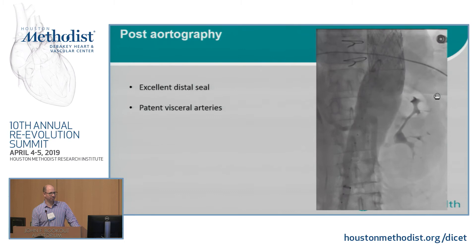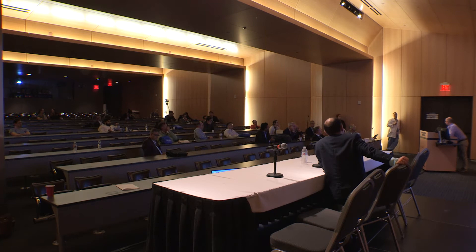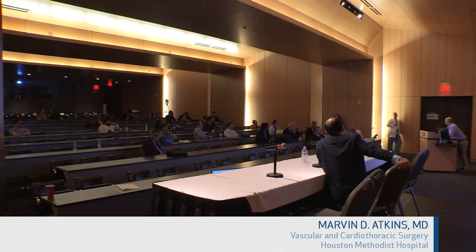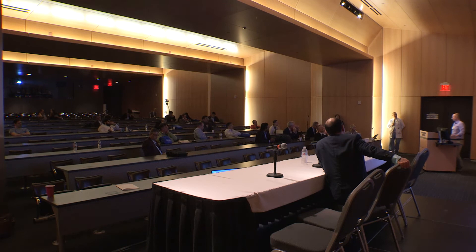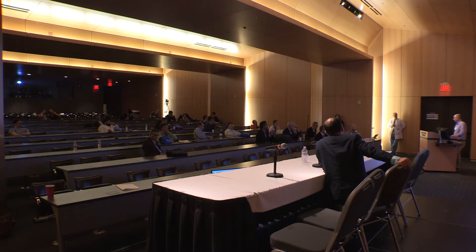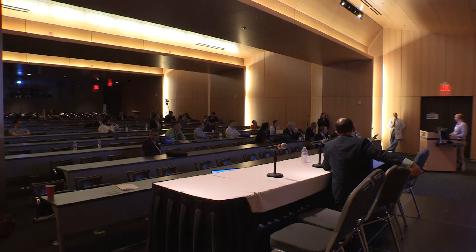Question: distally, is your endograft landing in native aorta or graft? Answer: distally it's in native — dissected native — aorta. A lot of people would be concerned about that in a Marfan's patient. TVAR for Marfan's really ought to be from graft to graft, bridging areas of previous operations. It's controversial — there's not a lot of great data. Anecdotally, we've had good results in connective tissue patients, and specifically in dissected connective tissue patients. They seem to remodel almost better than conventional non-connective tissue disease patients.